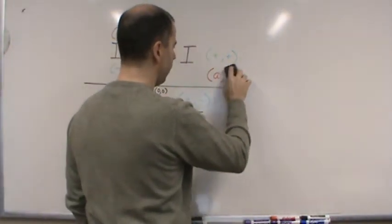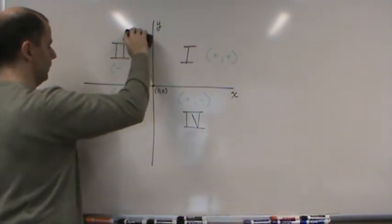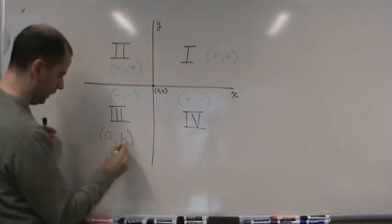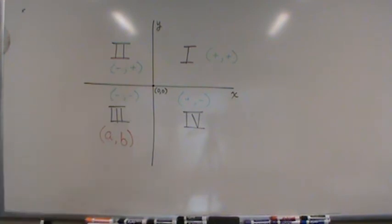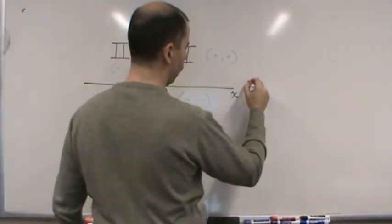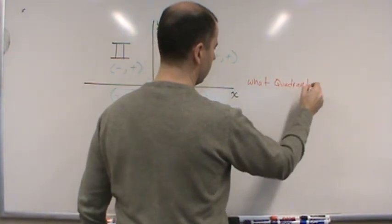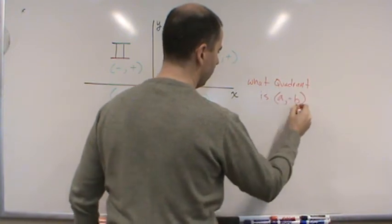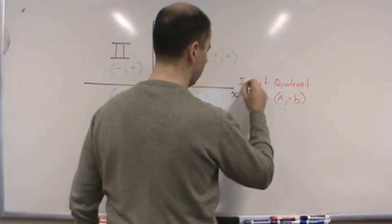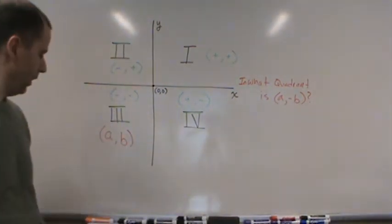Let's say we change this. Let's say I give you a point (a,b) in quadrant three. Now you know it's in quadrant three, and I ask what quadrant is (a, -b)?